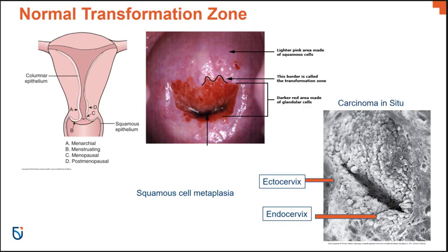That's why neoplastic changes or new growth are most common at the transformation zone — it's just a very vulnerable area. This image is showing you cervical carcinoma in situ, meaning cancer in place, viewed under a scanning electron microscope. This is summarizing the different stages of a female's life with hormonal involvement, and the presence of hormones at different times throughout life can lead to metaplasia and also to the changing location of that transformation zone.